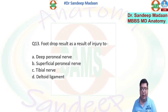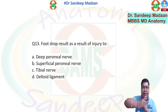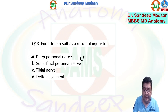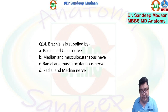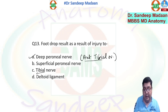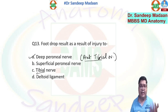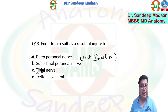Foot drop results from injury to which nerve? Foot drop occurs when the anterior compartment of the leg is not working — dorsiflexion is not happening. Normally dorsiflexion is done by the anterior compartment of the leg. This compartment is supplied by the deep peroneal nerve, also called the anterior tibial nerve because it is present anterior to the tibia. Note: the tibial nerve and the anterior tibial nerve are not the same — deep peroneal nerve is the anterior tibial nerve.